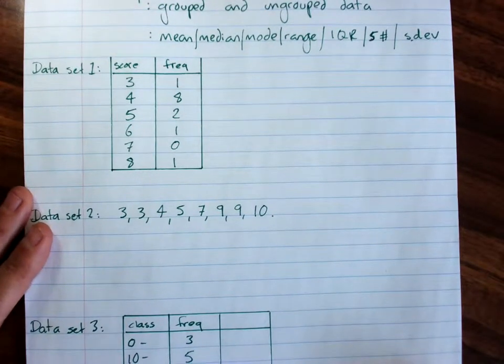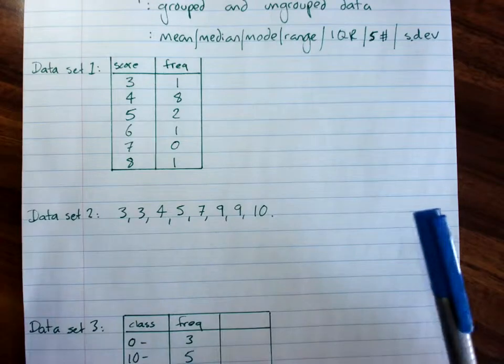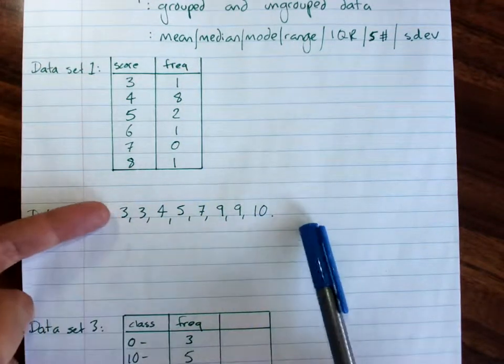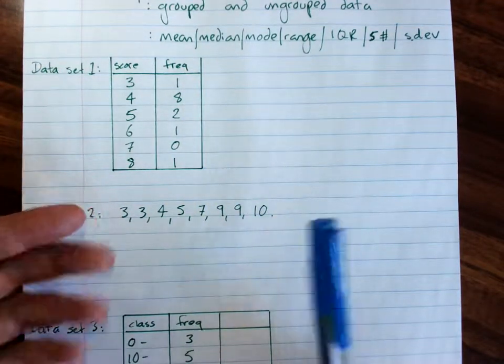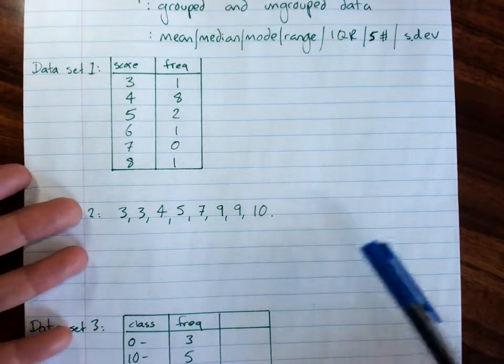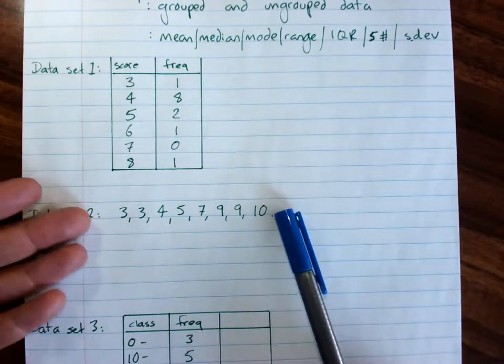The methods I'm going to show you here you can use for any set of data in a frequency table or any set of data on its own. You could work it out from a dot plot or a stem and leaf plot. If you can get the data, you're all good.